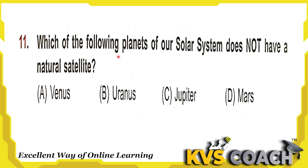Next question: which planet of our solar system does not have a natural satellite? Venus and Mercury are the two planets which do not have any natural satellite. So the right answer is option A, Venus — or it can be Mercury also. Uranus has 27 natural satellites, Jupiter has 79, and Mars has 2. Saturn has the maximum with 145 natural satellites. Earth has 1 natural satellite. The right answer is Venus, option A.